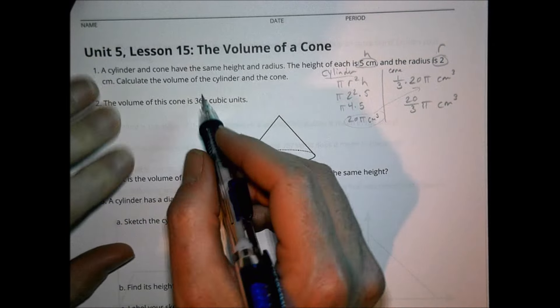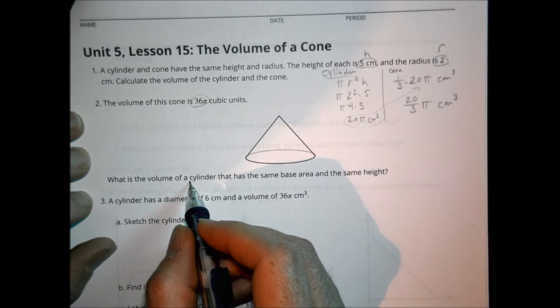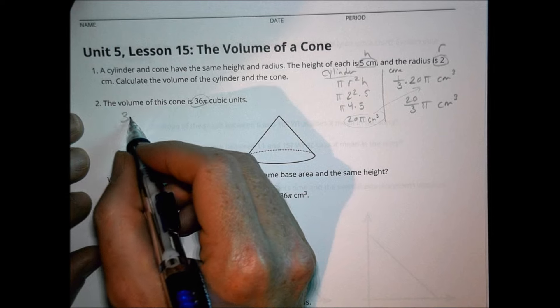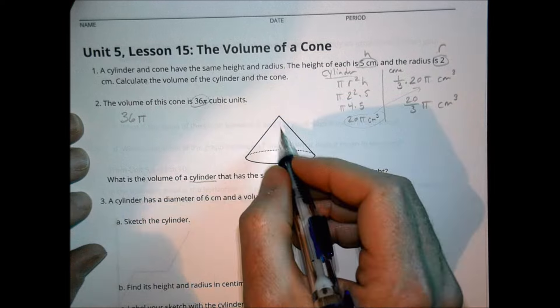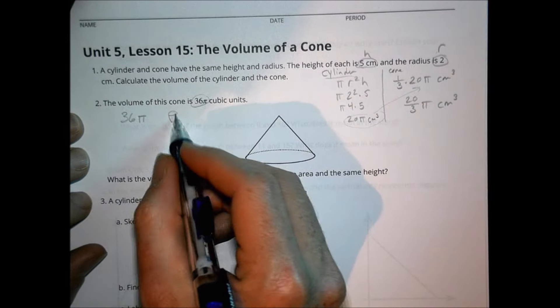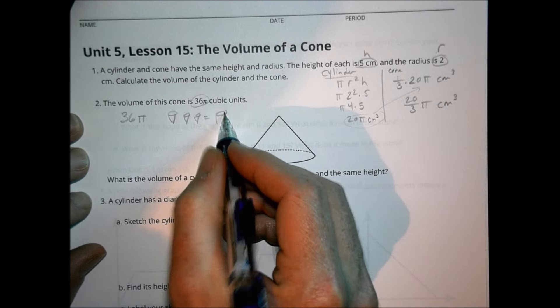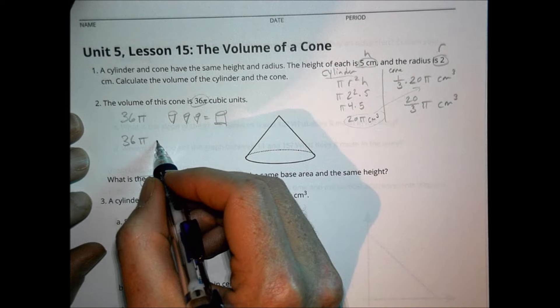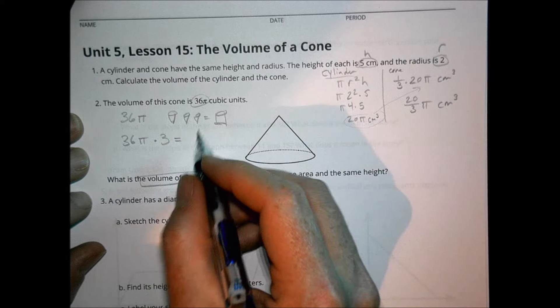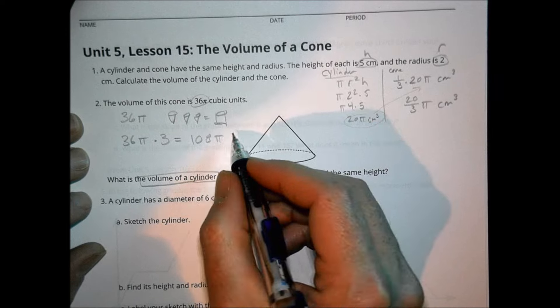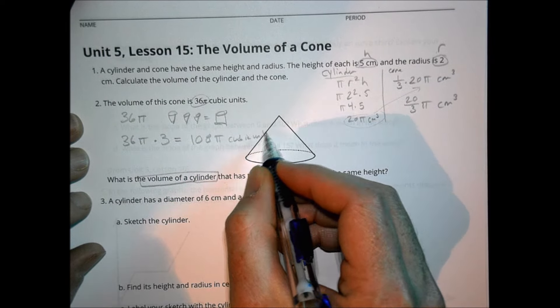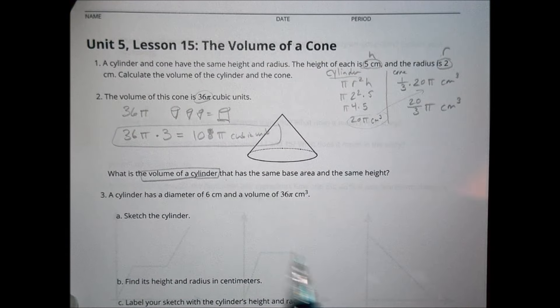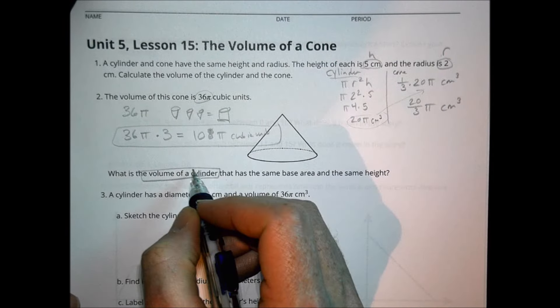Number two, the volume of this cone is 36 pi cubic units. What is the volume of a cylinder that has the same base area and the same height? If the volume of the cone is 36 pi, remember it takes three cones to equal one cylinder. So if the volume of the cone is 36, what's the volume of a cylinder? It'll be 36 pi times 3 because it takes three of them to get to be a cylinder. 36 times 3 is 108 pi, and that's still going to be cubic units. So that one is not quite as scary as it looks. You just have to know that volume of a cone is one third, so when I do cylinder, I'm just multiplying by 3.